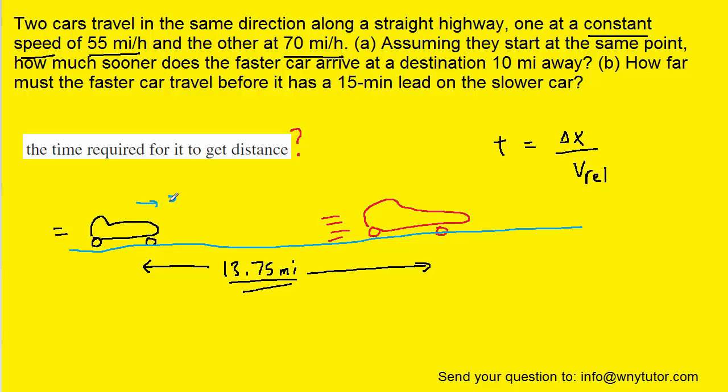We know the slower car is going 55 miles per hour, and the faster car is going 70 miles per hour. The distance between them is actually increasing not at either of those velocities, but by the difference of those velocities.